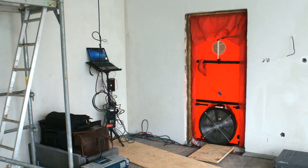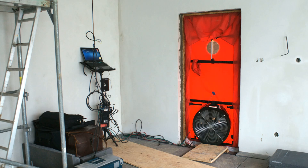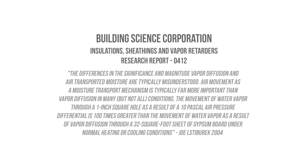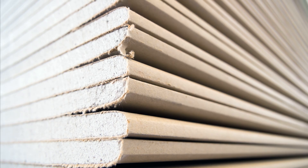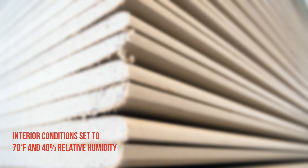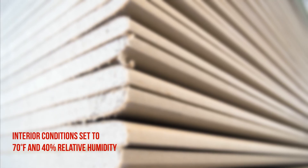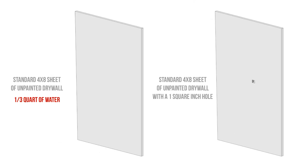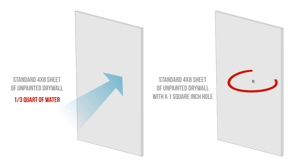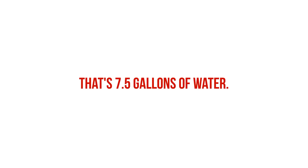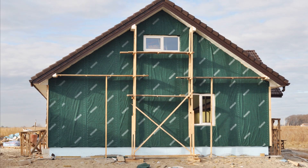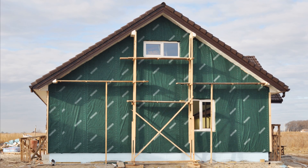Building Science Corporation tested this decades ago, which became the basis for modern-day codes in air leakage tests. They determined that air leakage had the potential to transport moisture in quantities that were orders of magnitude higher than diffusion during the same time period. The test was conducted on standard 4x8 sheets of drywall in a cold climate throughout an entire heating season, with the interior kept at 70°F and 40% relative humidity. The airtight sheet had about a third of a quart of water diffuse through it, while a sheet with a 1 square inch hole resulted in nearly 30 quarts of water transported through air leakage — 100 times more than diffusion, equivalent to 7.5 gallons of water through that single hole.